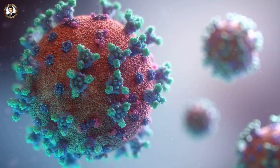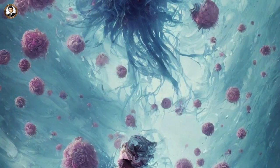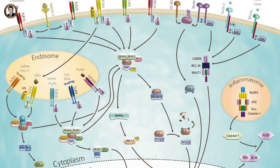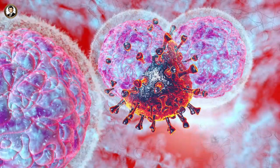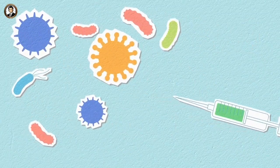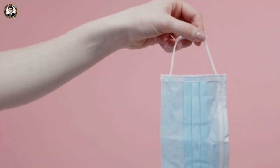Immune response: The immune system plays a vital role in combating the cold virus. Specialized immune cells such as lymphocytes, macrophages, and natural killer cells are activated to target and eliminate infected cells. The innate immune response is the body's initial defense, providing a rapid, nonspecific response to infections. The adaptive immune response is specific and takes longer to develop; it involves B cells and T cells, which recognize viral antigens and produce antibodies to neutralize the virus, and cellular immunity to eliminate infected cells.